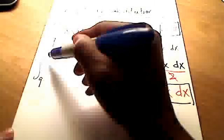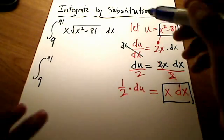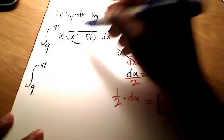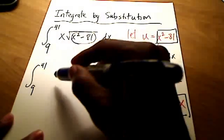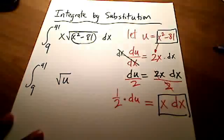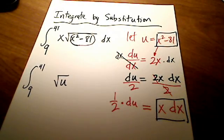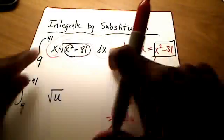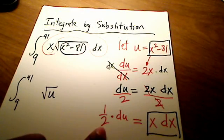Okay. So I've got it going from 9 up to 41. And check this out. Right. In place of x squared minus 81, I'm putting in the letter u. So I've got the square root of u. And in place of, let's see if I can do this in red. Maybe I'll circle it for you in red. In place of xdx, in place of xdx, I'm going to substitute in this 1 half du.